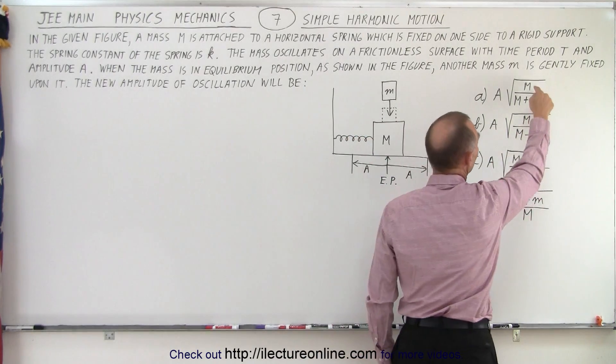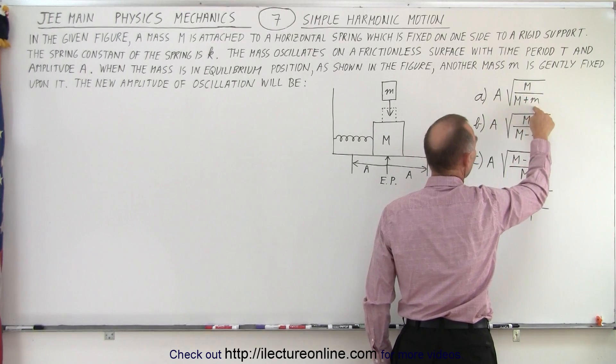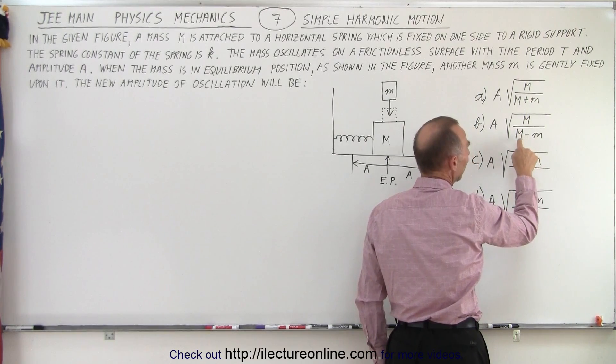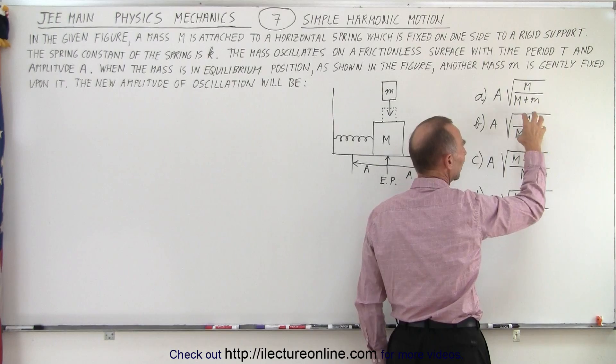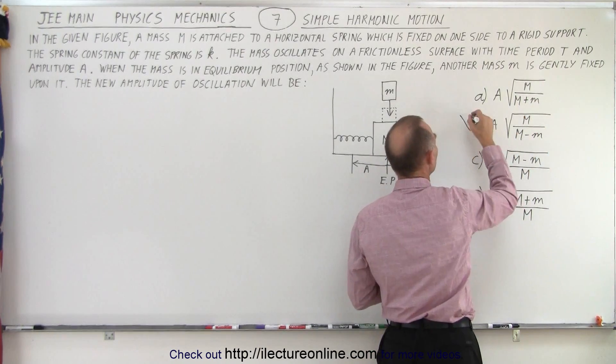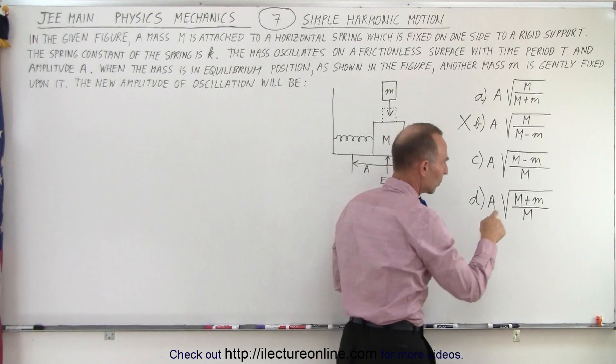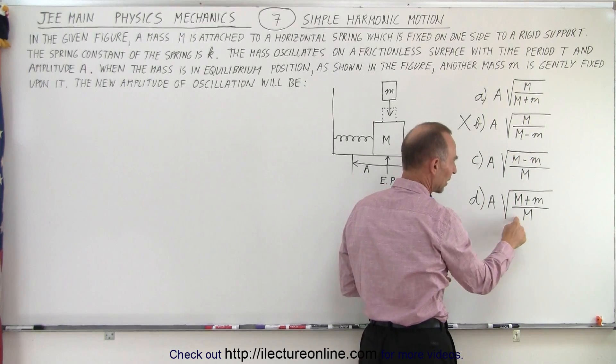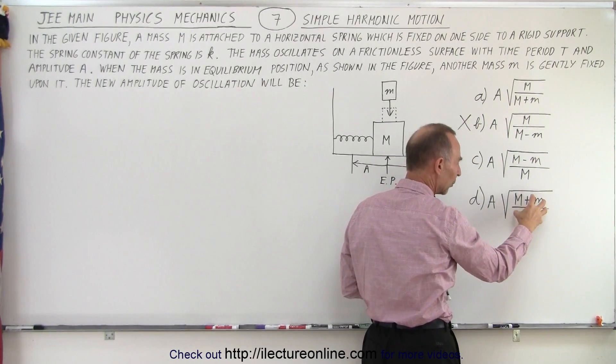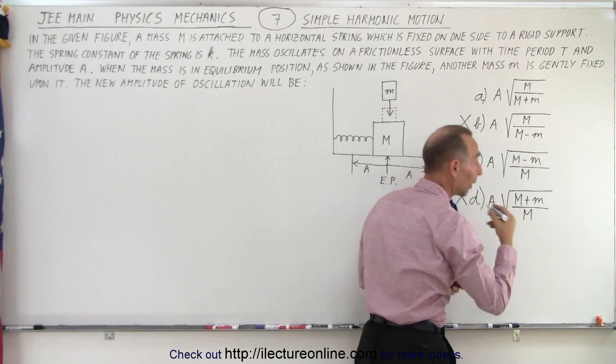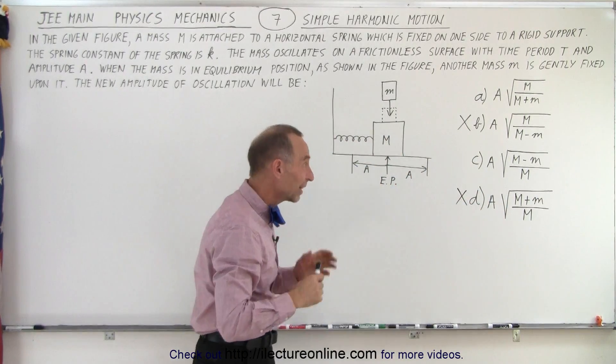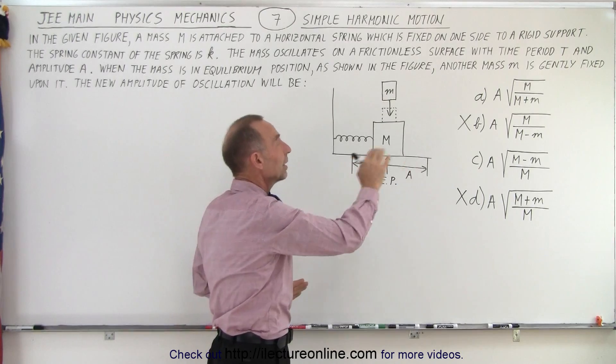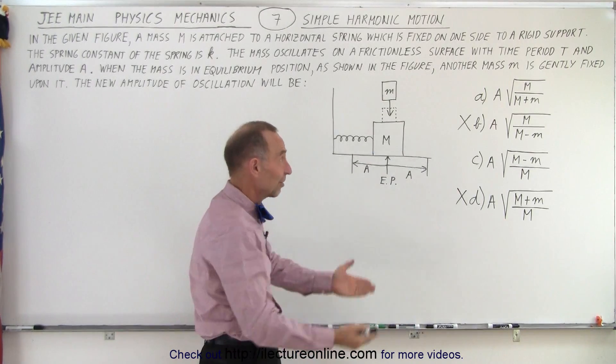So whatever this number is, it has to be smaller than one for it to be possible. Now notice that this is smaller than one because m divided by m plus m, if m is greater than zero, then this must be less than one. But here, when you divide m by m minus m, that's a number that's greater than one, so definitely b could not be a possible answer. Here, m minus m over m is less than one, so this could be a possible answer. But here, m plus m over m, that's a number bigger than one. So right away, if you don't know how to solve this problem, from the perspective that the amplitude has to become smaller, you can already eliminate two of the four answers, and now you have a 50-50 chance of guessing the right answer.